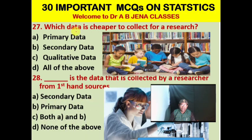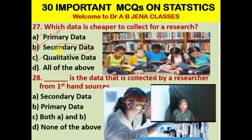Next MCQ: Which data is cheaper to collect for a resource? A. Primary data. B. Secondary data. C. Qualitative data. D. All the above. B is the right option. Secondary data is cheaper to collect for a resource.